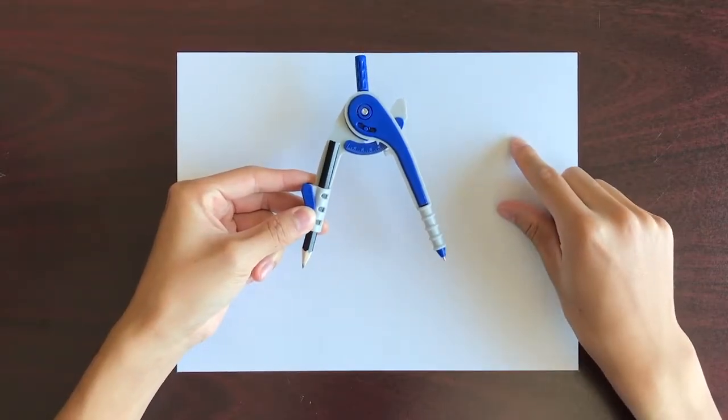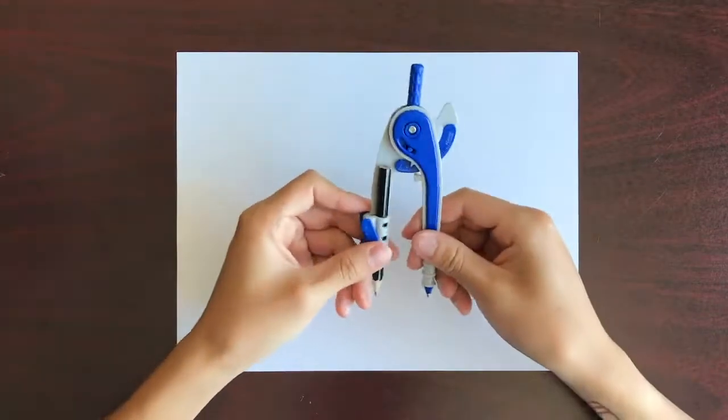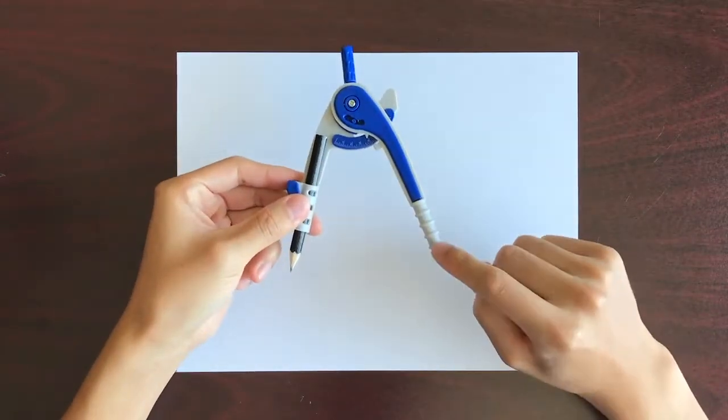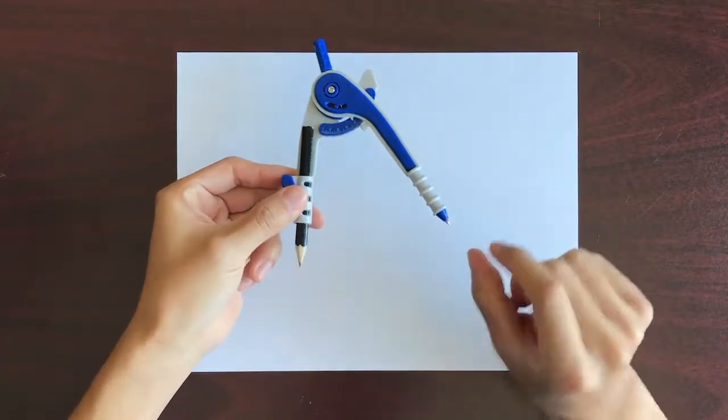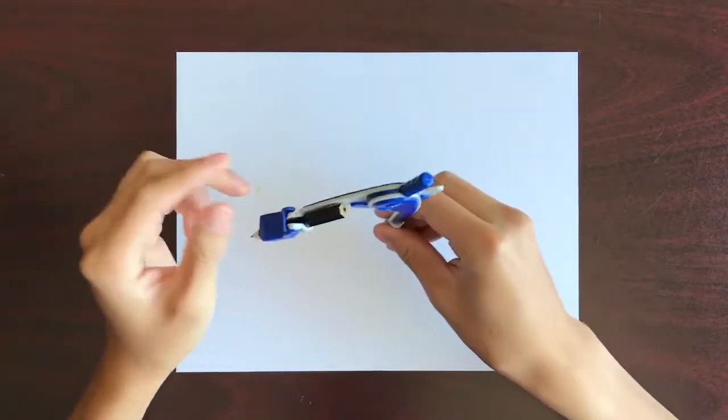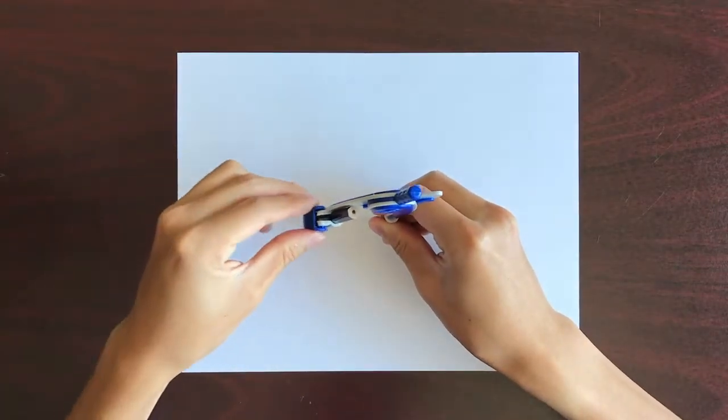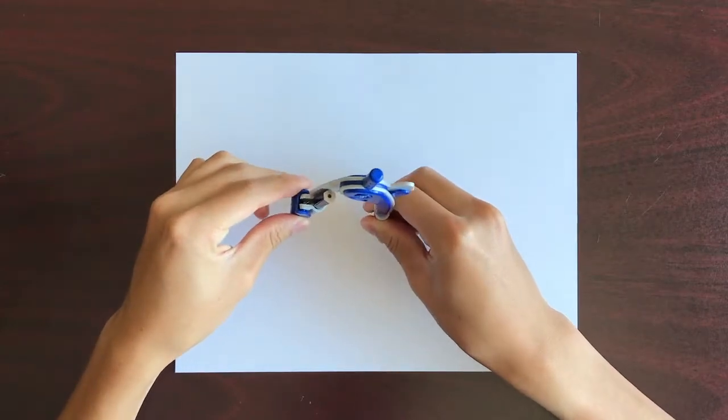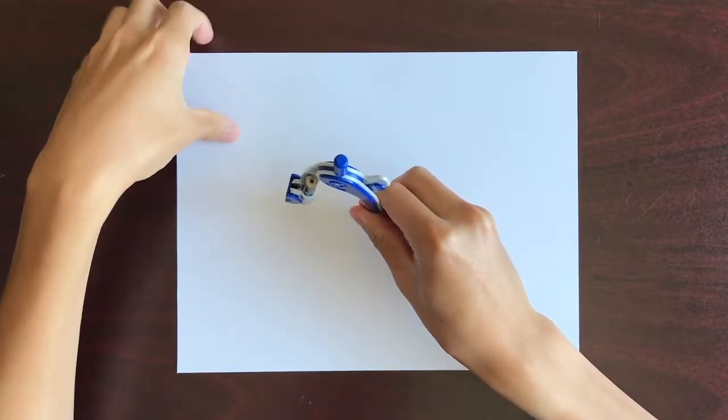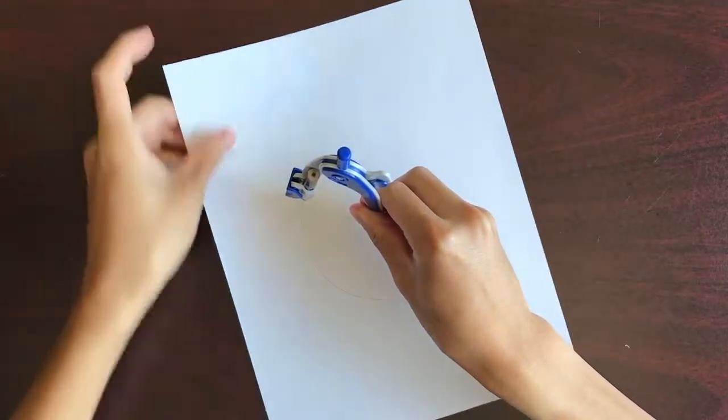Before we start, I will give you a quick rundown on how a simple compass works. There's an anchor leg and a pivot leg. The anchor leg is a needle point that sticks to the paper. The pivot leg is adjustable for the size of the circle. Then the paper is rotated 360 degrees to create a perfect circle.